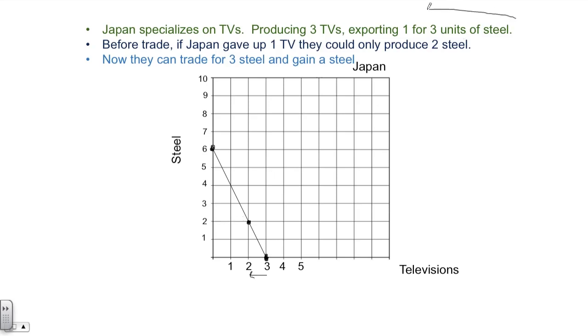Well now, as they trade, and based on the terms of trade, they are now trading one television for three steel. So this point indicates a scenario before trade. Whereas this bullet point represents a scenario after trade.